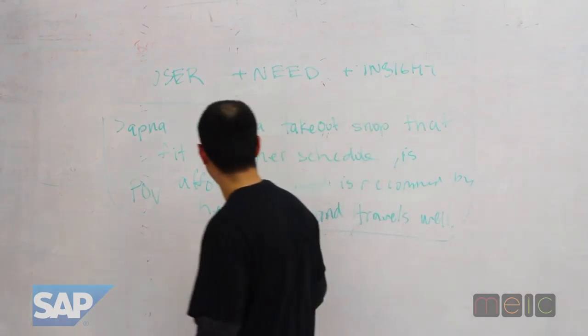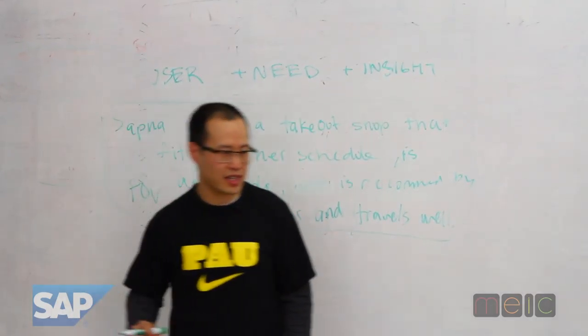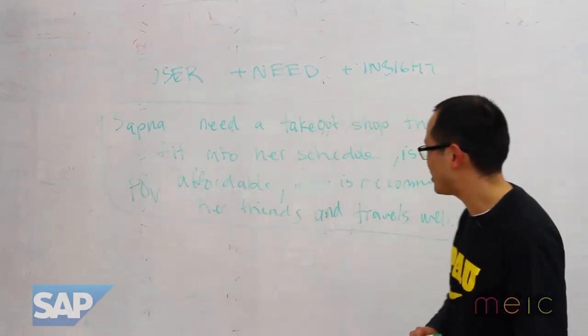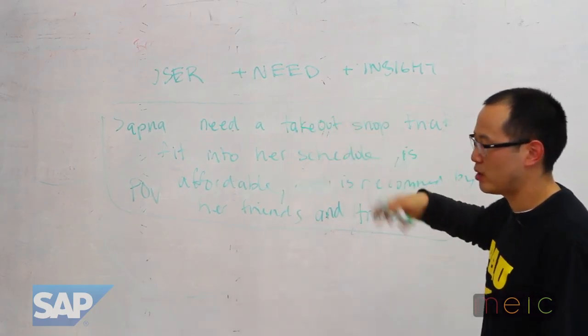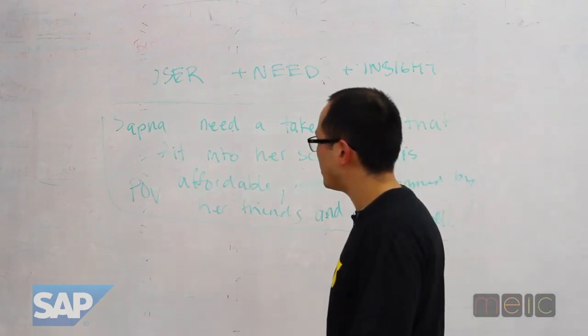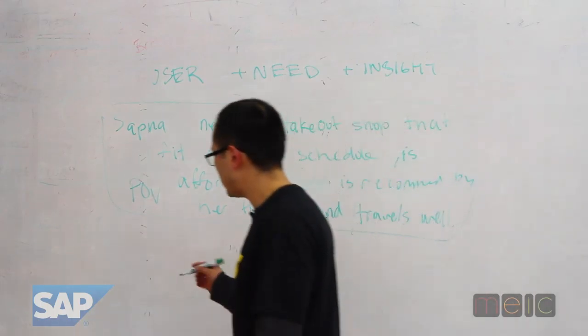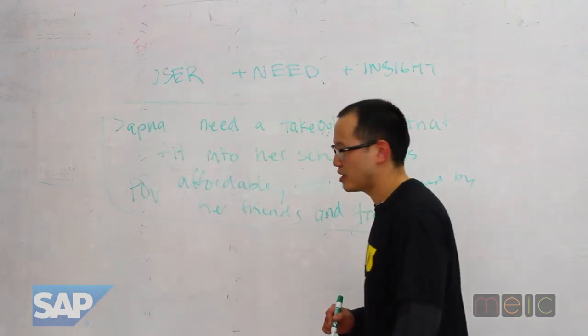So now what we're going to do is memorize that. No, no, that's good, that's good. See, we're limited space here. We probably wouldn't have deleted that. We would have written that down. So now the last thing, let's go create some how might we statements, guys. Are you guys ready to create some how might we statements?